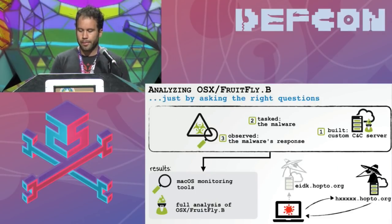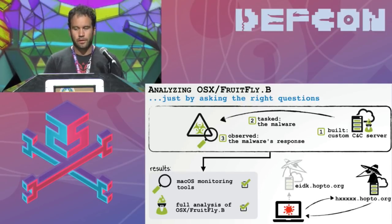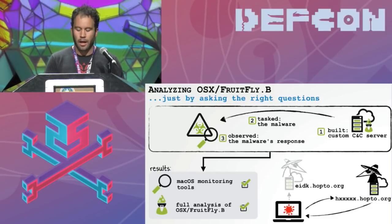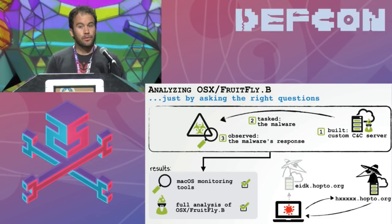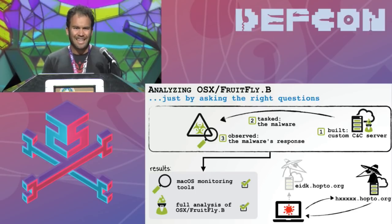Let's wrap this all up. Today we illustrated how to fully analyze a fairly complex piece of malware just by asking the right questions — in three steps: build a custom command and control server, task the malware, then observe the malware's response to fully reveal its capabilities. Along the way we wrote some cool monitoring tools for Mac OS that will be open source and posted online. The end result is a full analysis of Fruit Fly variant B. Also, since we were able to register these custom C2 server domains, we uncovered a large number of victims and got insight into who these individuals were. Unfortunately it looks like this malware was designed with a very creepy, perverse end goal.